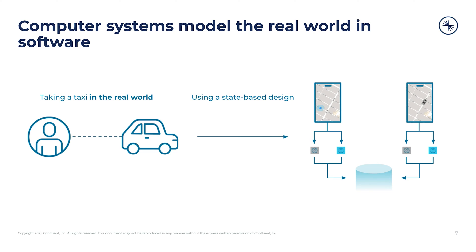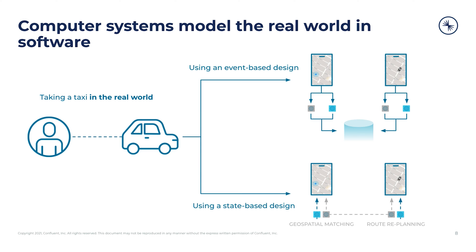Similarly, the design of a software system has two coordinate systems: state-based and event-based. For example, a state-based model of a taxicab system would use a database and synchronous network calls to coordinate the state in the system. The event-based model would use continuous and asynchronous streams of immutable events. You can solve pretty much any problem you might face with either type of model, but just like in mathematics, some problems suit one modeling approach better than the other.